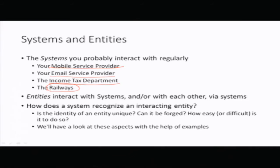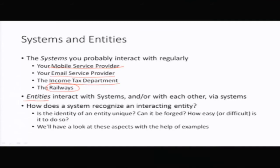So we are trying to understand systems, which may not just be machines — they could be a set of people or an organization. Entities are the ones which actually interact with the system. They could be human beings, devices, or anything. Basically in this lecture we will be talking about entities which are mostly human beings. Now that we know what a system is and what an entity is, how do systems recognize entities?